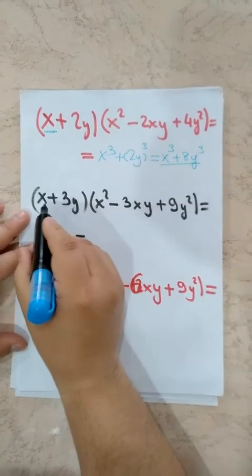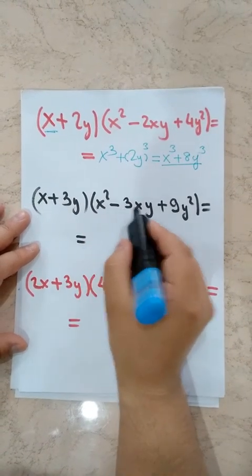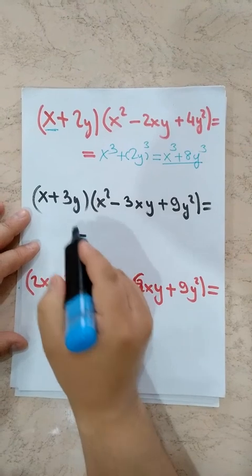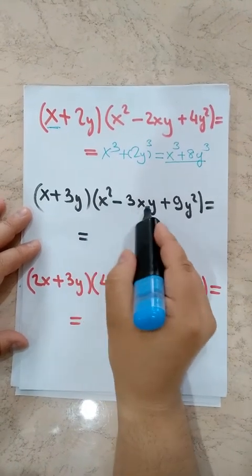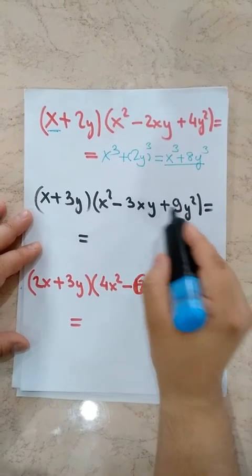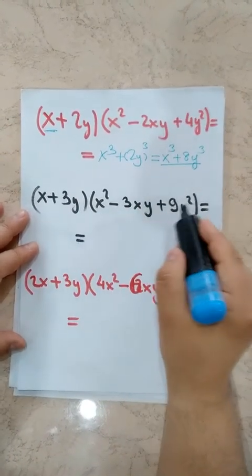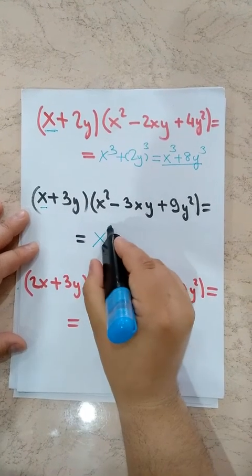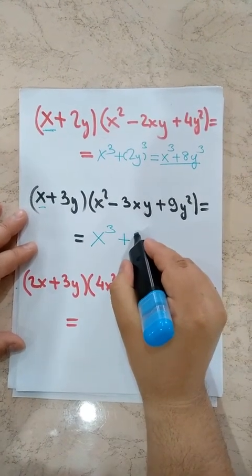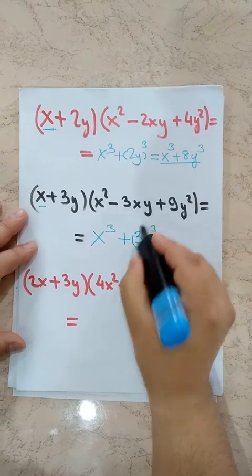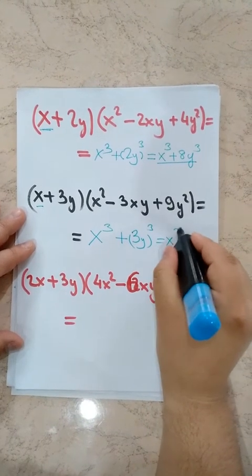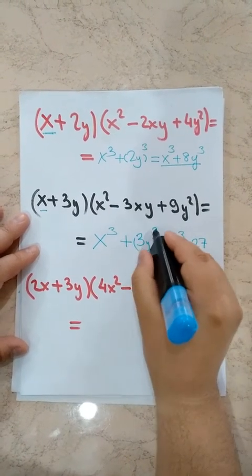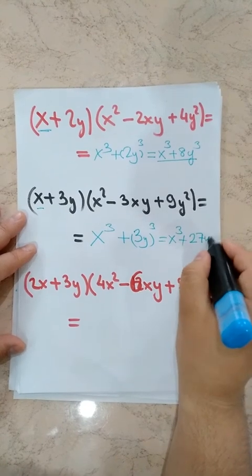Next: X plus 3Y times X squared minus 3XY plus 9Y squared. Note that 3Y squared is 9Y squared, which is the second term squared. Our first term gives X cubed and second term is 3Y, so plus 3Y cubed. Opening: X cubed plus 3 cubed is 27, so X cubed plus 27Y cubed.